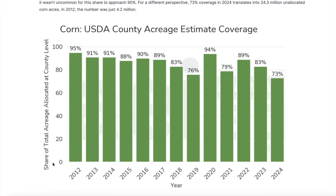The first chart here looks at corn — this is the USDA county acreage estimate. What we looked at is how many acres have been allocated to a county and how many total acres there were. You can see that if we look back 10 or so years ago, it was hanging out around 90%. There was a change in the way they were doing things before then, so we were at 95%, then dropped down to around 90%. In 2019, things got a little hairy with that prevent plant, but we got back around that 90% threshold. But as you can see, in 2024, we stepped down all the way to 73% — meaning only 73% of the national corn acres got allocated to a county.